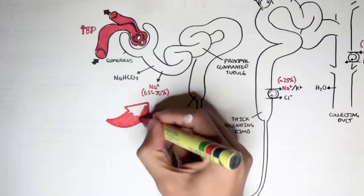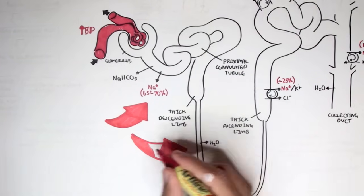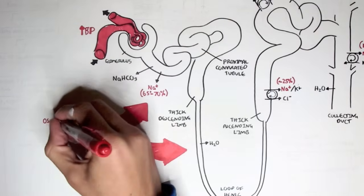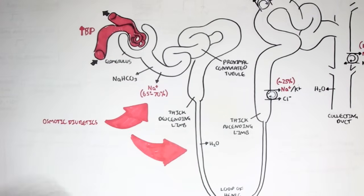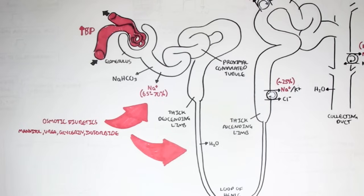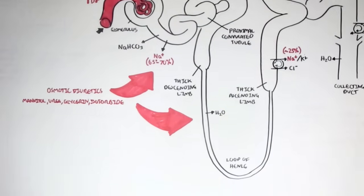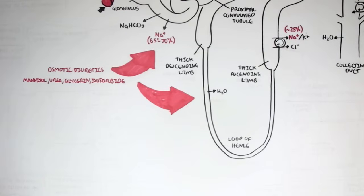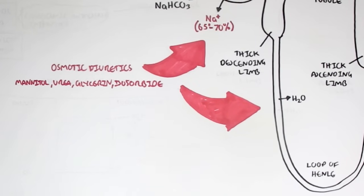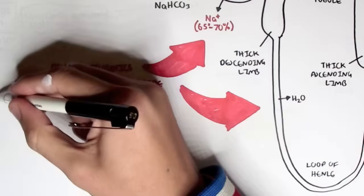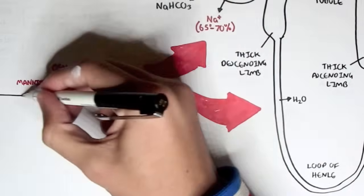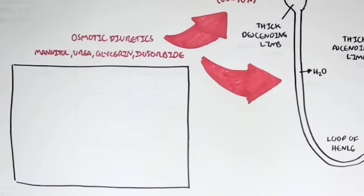The first type of diuretics is osmotic diuretics, which work in the proximal convoluted tubules and also the loop of Henle. These are substances such as mannitol, urea, glycerin, and isosorbide. Their main function is that they increase the solute concentration within the tubules and therefore cause water to be retained within the tubules. This follows the osmosis rule: where there is a higher concentration of solutes, more water will tend to go there.